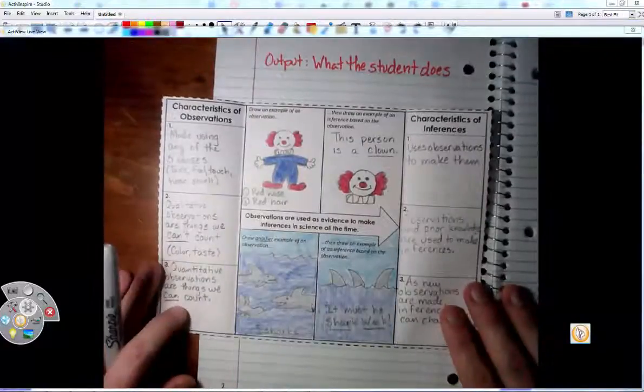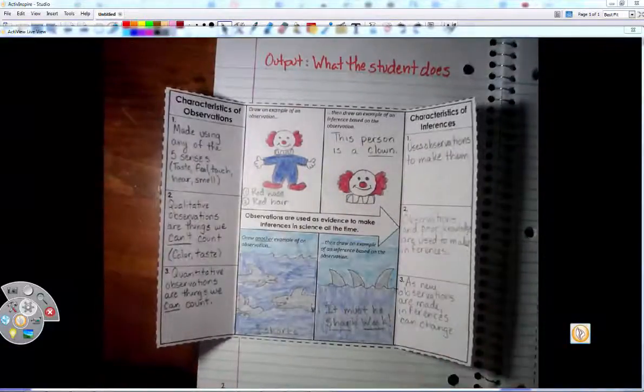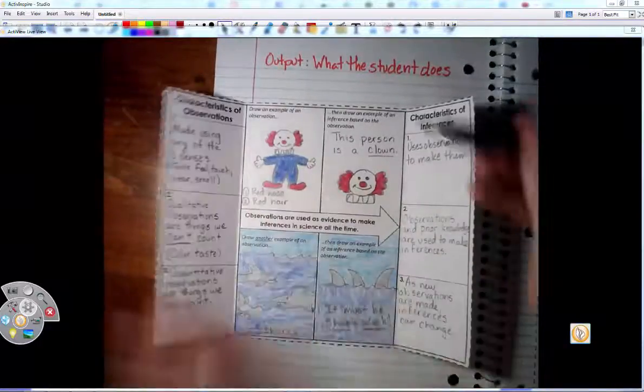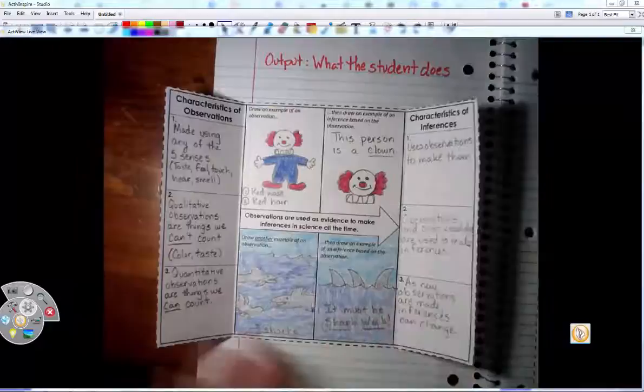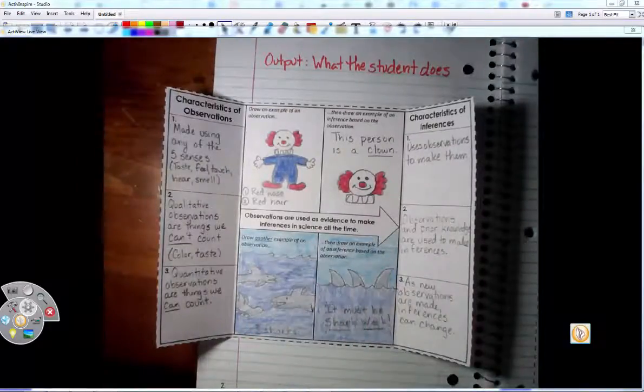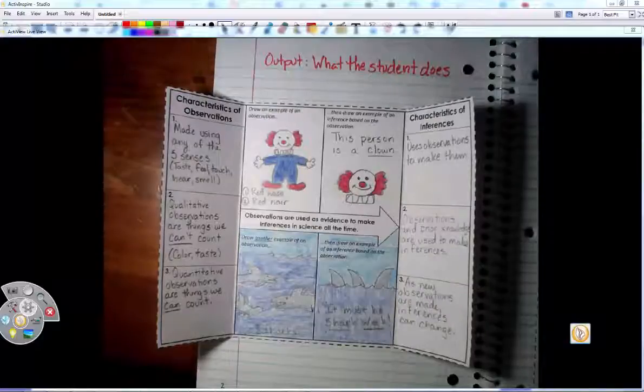Here's our foldable about the characteristics of observations and inferences. So we have our characterizations here: 1, 2, 3. Characteristics of inferences here: 1, 2, 3. And then I have you usually do some sort of drawing or visualization or model drawing or something like that in order for you to understand what the concept is.